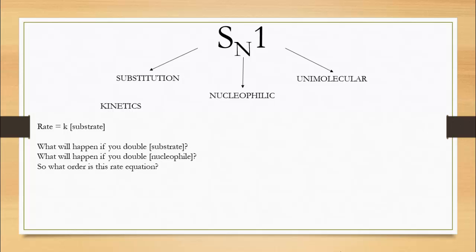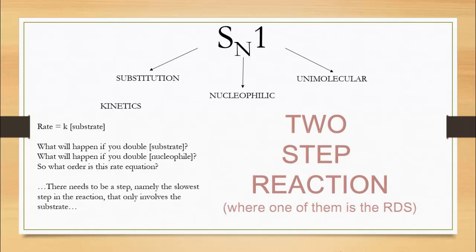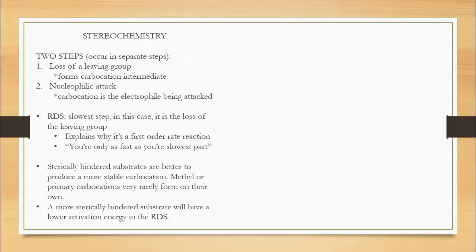So, this tells you the step that includes the substrate is the rate determining step of a two-step reaction. The two steps are the loss of the leaving group, resulting in a carbocation intermediate, which is followed by a nucleophilic attack, which attacks the newly formed electrophile.